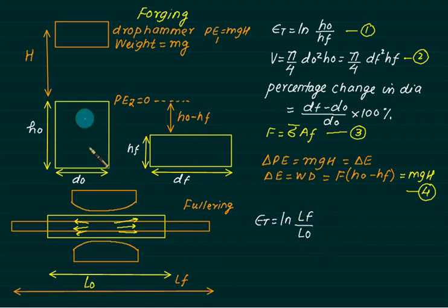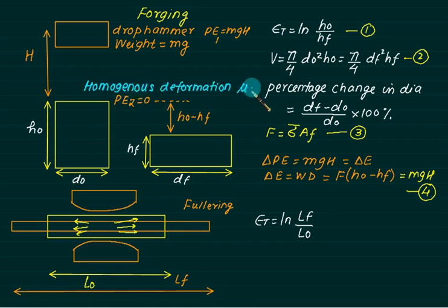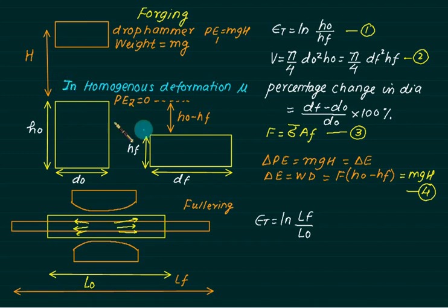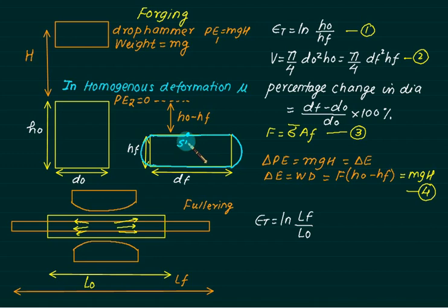This type of deformation without friction is called homogeneous deformation, where the friction value equals zero. If friction is present, it becomes inhomogeneous deformation, and the final shape shows a barreling effect. In barreling, sticking friction occurs at the centre and sliding friction occurs at the outer sides.